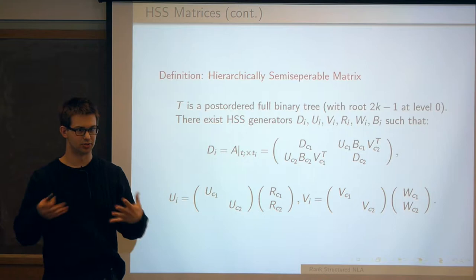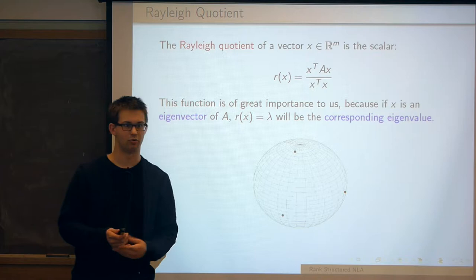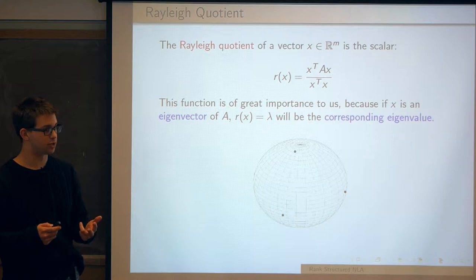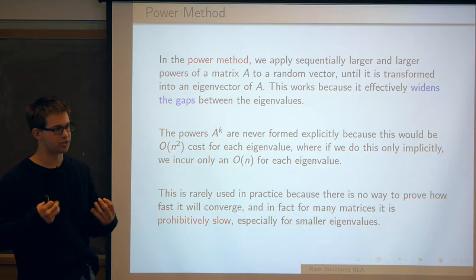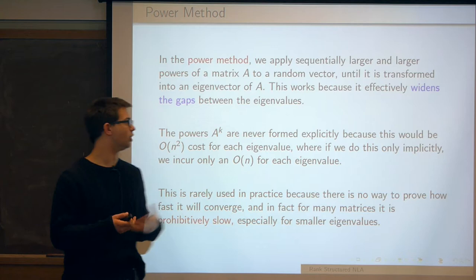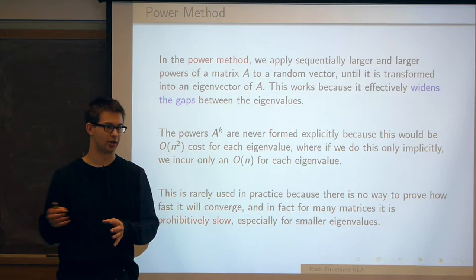Now we're going to talk about some of the basic eigensolvers you're probably familiar with. I'm going to review the concept of a Rayleigh quotient, because in many primitive eigensolvers we first have an eigenvector and want to extract an eigenvalue. One of the earliest methods is the power method: if you apply your matrix A over and over again to a randomly drawn vector, in many cases you will get the largest eigenvector. It's very cheap because you're just doing matrix-vector products, but you can't prove anything about its convergence.